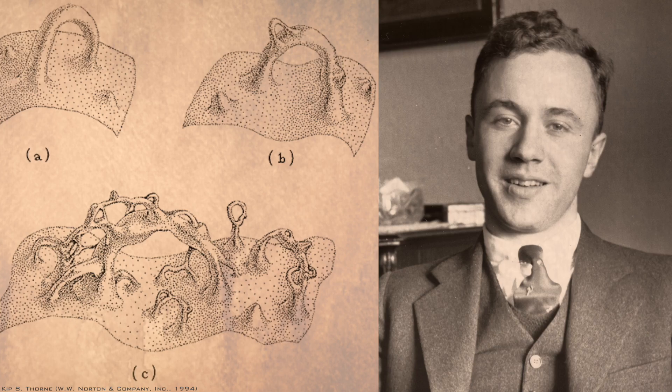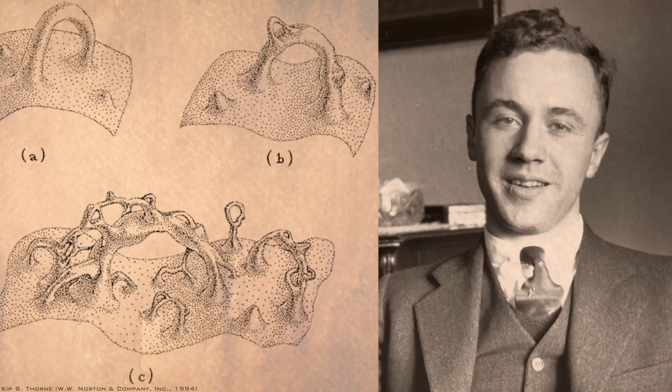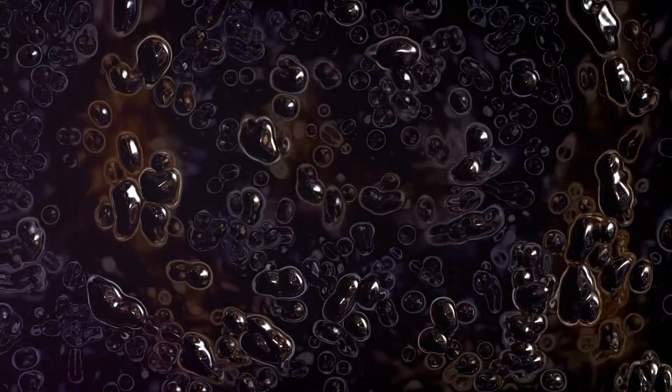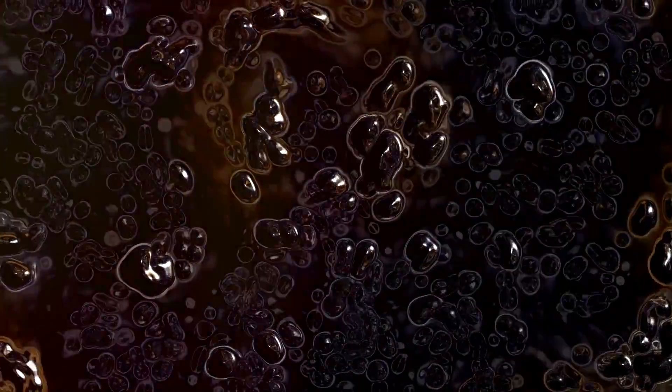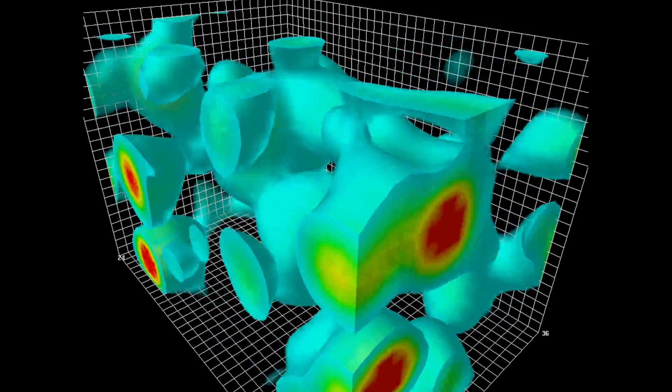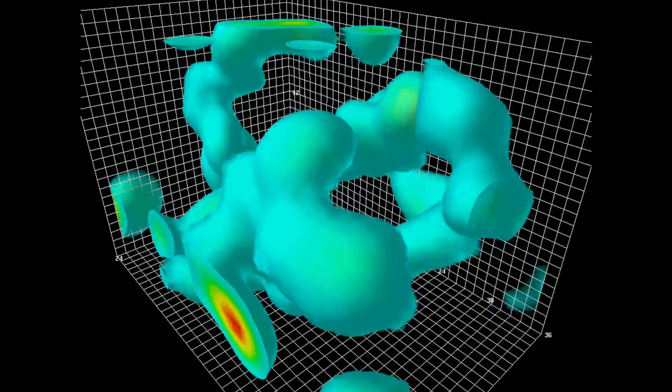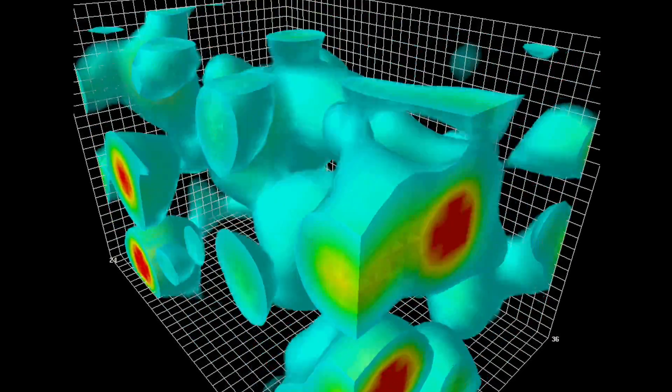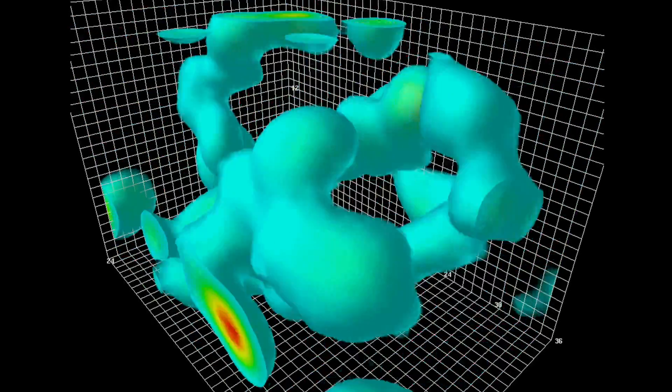In 1955, American physicist John Wheeler introduced the concept of quantum foam, describing frothy fluctuations in the fabric of Planck-scale space-time. Here particles of both matter and antimatter spontaneously emerge and vanish, a process known as the creation and annihilation of virtual particles. More on that in a moment.